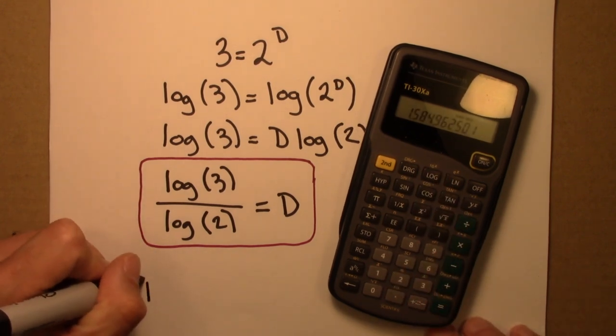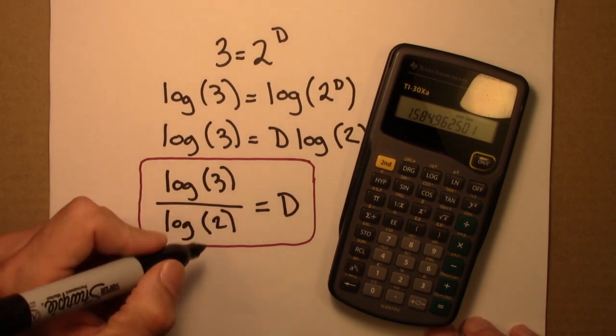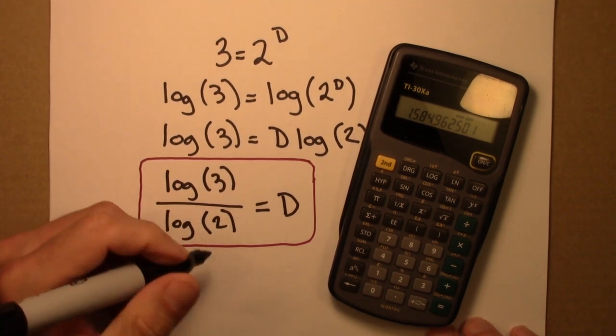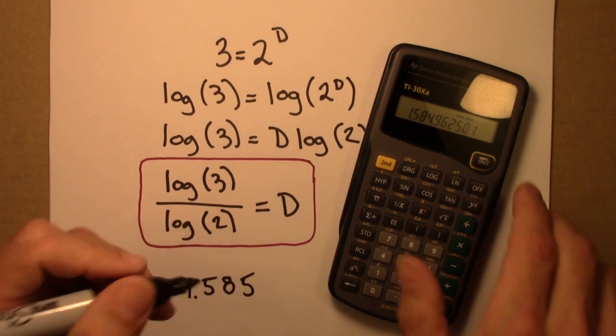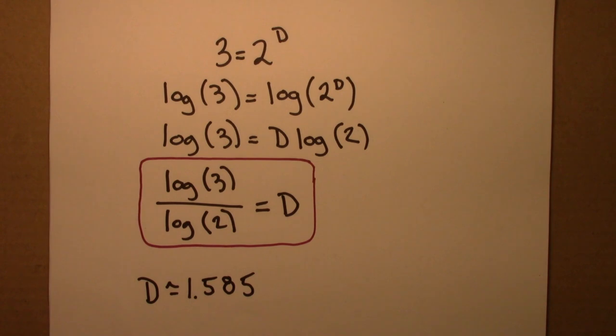equals. And I get that d is about one point five eight five. So again, we see a non-integer dimension.